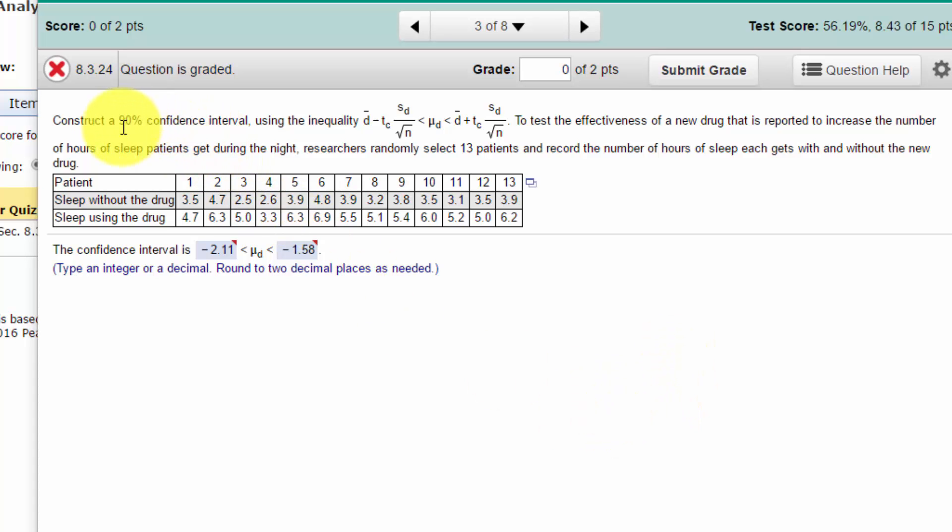They want a 90% confidence interval using the inequality d̄ minus t_c, where there's a t distribution, the mean difference μ_d, and d̄ plus t_c. That may confuse some people when the question's asked that way, but really they just want the lower limit and upper limit.